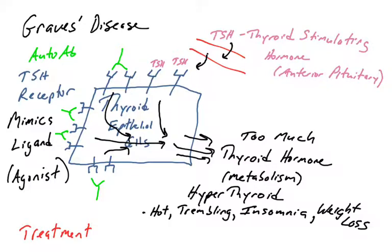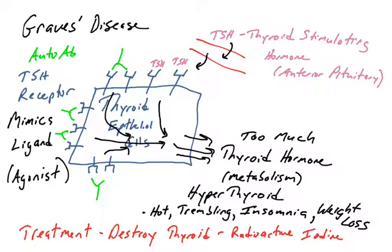There is a treatment for Graves' disease, and it actually doesn't involve the immune system. It involves destroying the thyroid with radioactive iodine. Iodine is used in the production of thyroid hormone, so when an individual ingests radioactive iodine, it concentrates in the thyroid gland and the radiation destroys the thyroid tissue. After treatment, the autoantibodies won't be doing anything. The individual will lack thyroid hormone, but it can be replaced using synthetic thyroid hormone as a prescription drug.